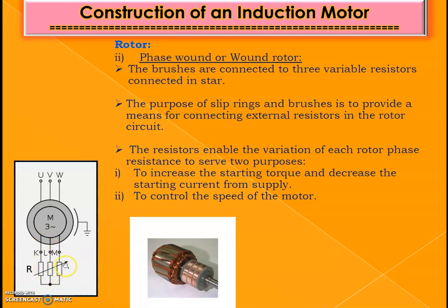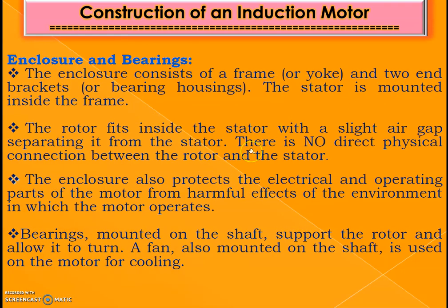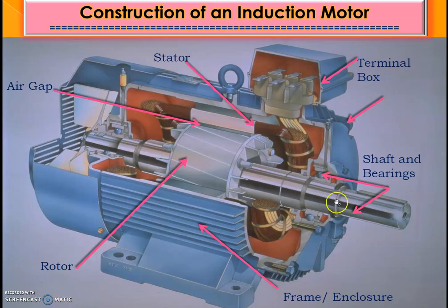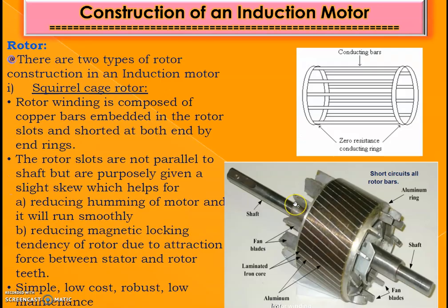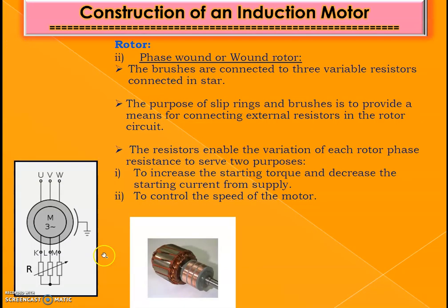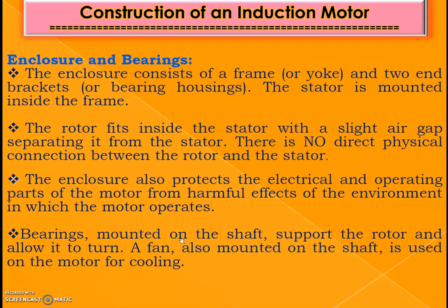The rotor winding can be shorted externally through external resistance or shorted directly. Each slip ring carries a carbon brush and can be connected to external resistance. This increases the starting torque, decreases the starting current, and controls the speed of the machine — it is generally used for high-rated machines. Enclosures and bearings are used to fit the stator and rotor, creating an air gap between them. Bearings are mounted on the shaft to support the rotor, and a fan mounted on the shaft provides cooling by passing air through the machine.